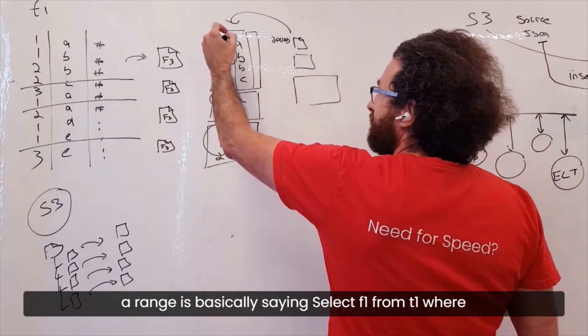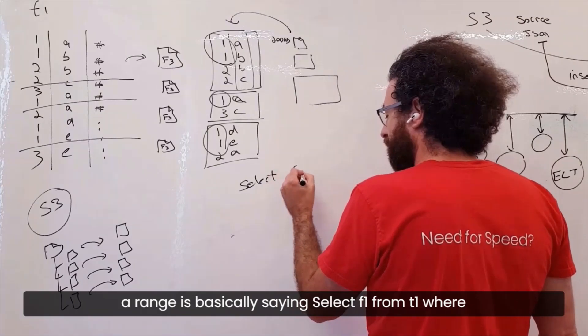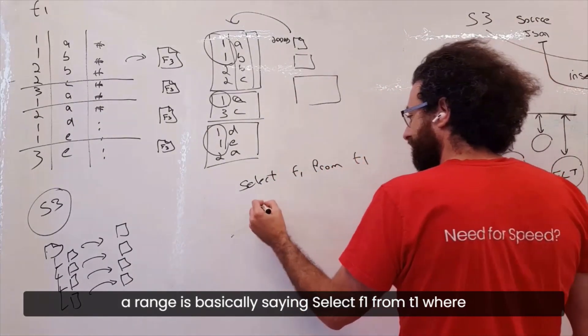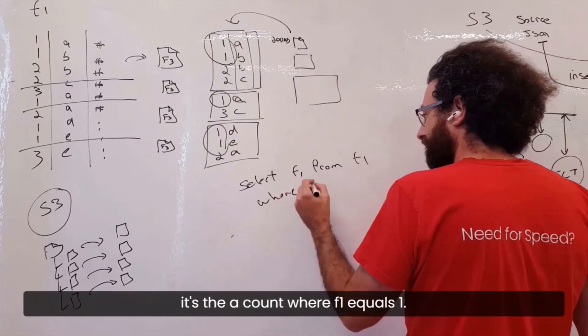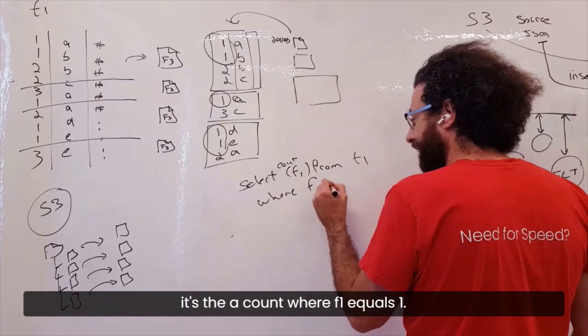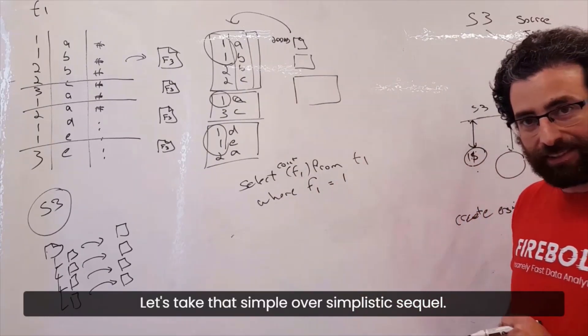A range is basically saying, select F1 from T1 where, let's do a count, where F1 equals 1. Let's take that simple, oversimplistic SQL.